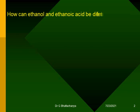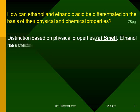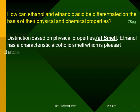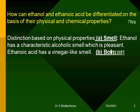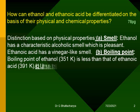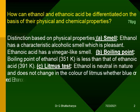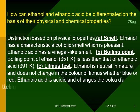How can ethanol and ethanoic acid be differentiated on the basis of their physical and chemical properties? Distinction based on physical properties: A. Smell — ethanol has a characteristic alcoholic smell which is pleasant, while ethanoic acid has a vinegar-like smell. B. Boiling point — ethanol at 351K is less than that of ethanoic acid at 391K. C. Litmus test — ethanol is neutral in nature and does not change the color of litmus, whether blue or red. Ethanoic acid is acidic.